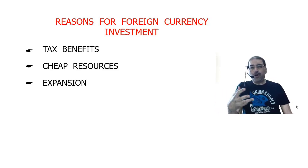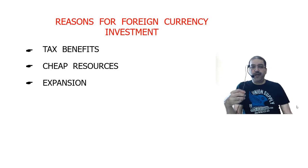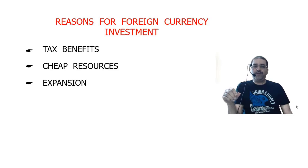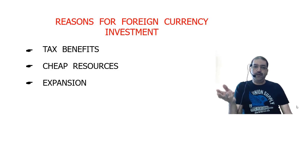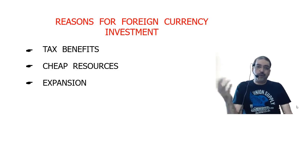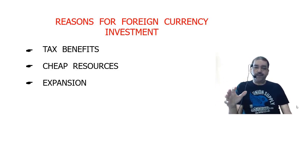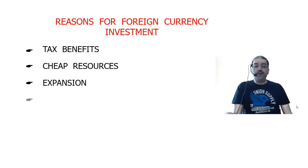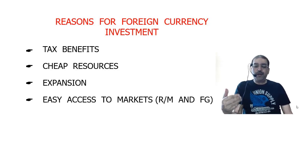Another reason: if I am always importing raw materials from Germany and facing foreign exchange rate problems, I will set up my factory in Germany so that raw materials are locally available. Or if I am exporting finished products to Switzerland, instead of manufacturing here and exporting, I will set up a unit in Switzerland to cater to local demand — easy access to raw material or finished goods markets.